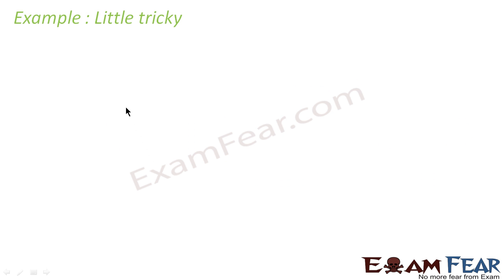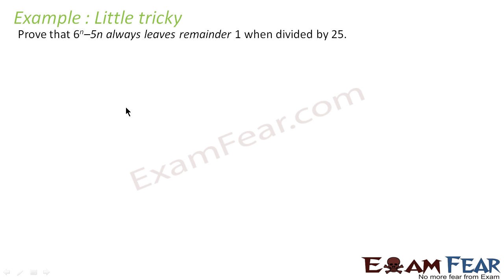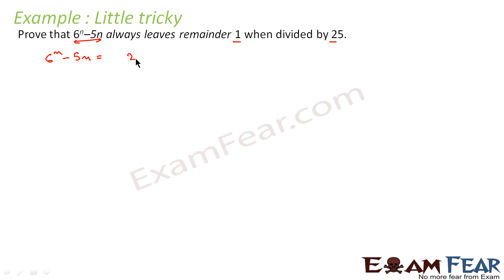We'll take one more example that is a little tricky. We have to prove that 6 to the power n minus 5n leaves a remainder 1 when divided by 25. So that means 6 to the power n minus 5n is nothing but 25k plus 1.